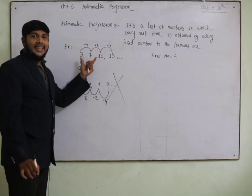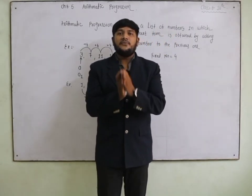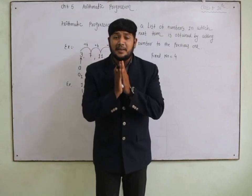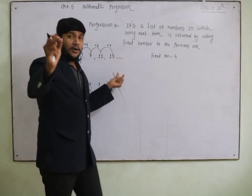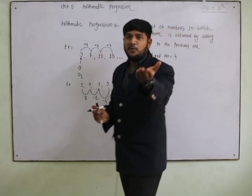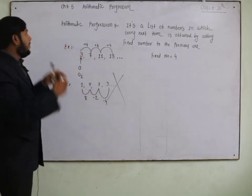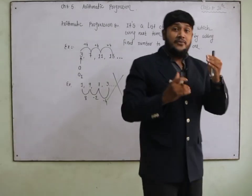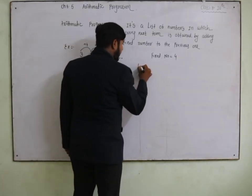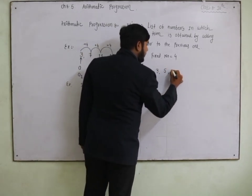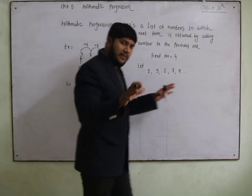In an actual AP, the difference between each and every pair of consecutive terms is always the same. Also always remember: in your AP you can only use three dots. Now moving forward, let us take the example: 1, 3, 5, 7, 9 — this is an AP.